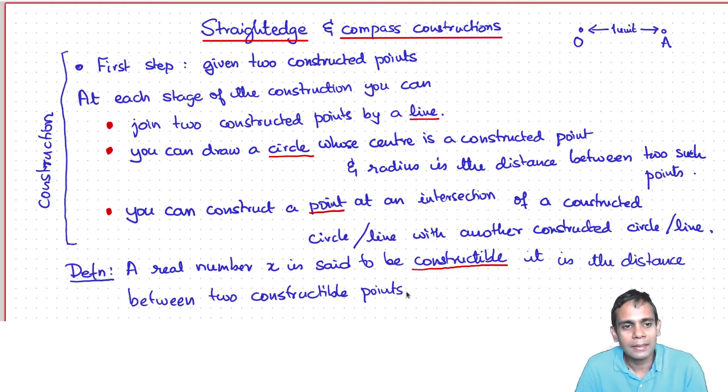Now note that a construction is a finite sequence of steps and at each step you only have a finite set of possibilities. So the number of constructions is countable and so also the number of points that you would have in any construction is finite. So the number of possible distances that you can construct is countable and so there are very few countable real numbers. Most real numbers are not constructible.